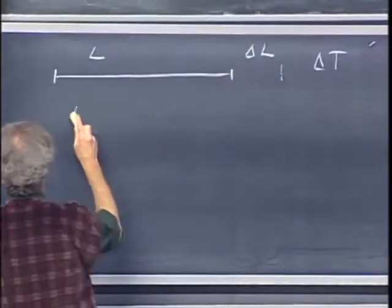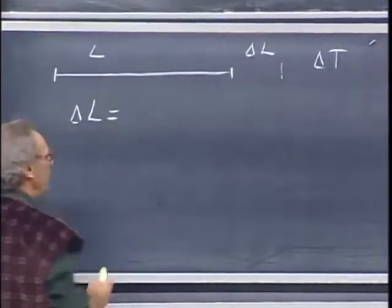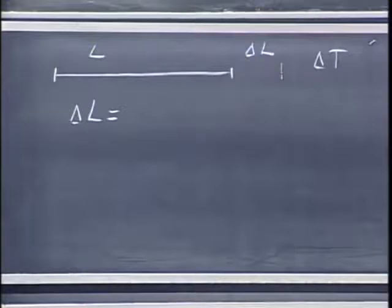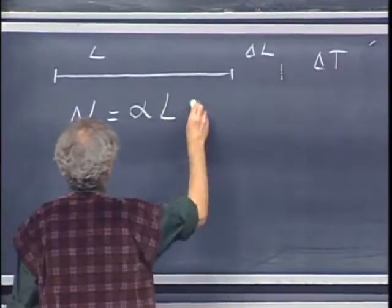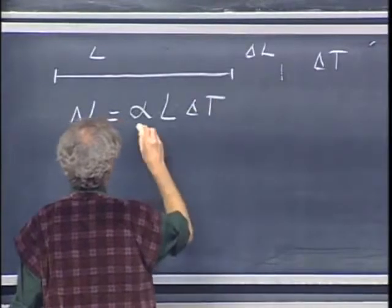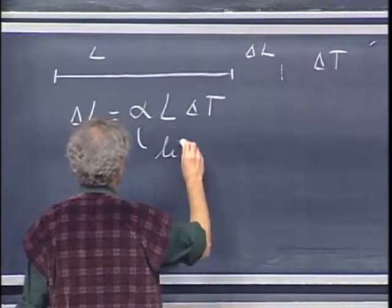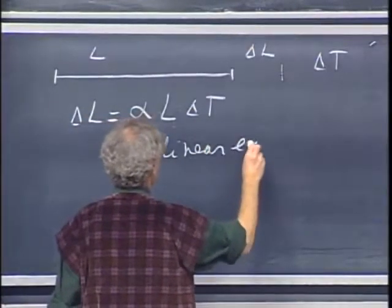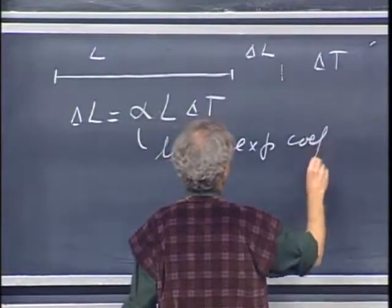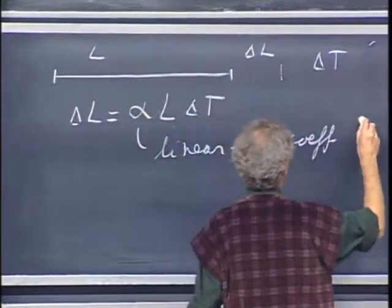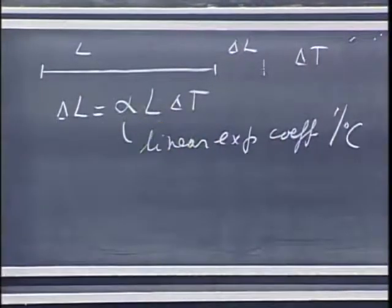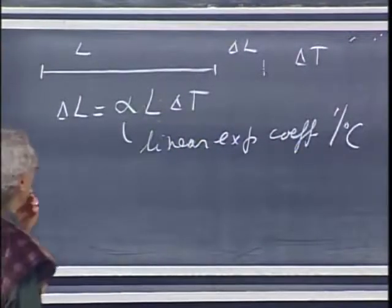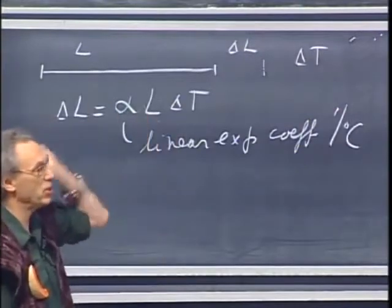That delta L can be expressed in a very simple way. It is alpha times L times delta T, and alpha is called the linear expansion coefficient. The units are one over degree centigrade or one over degree Kelvin, which is the same, because it's the increments that matter.